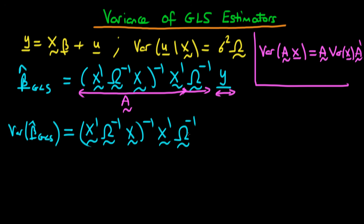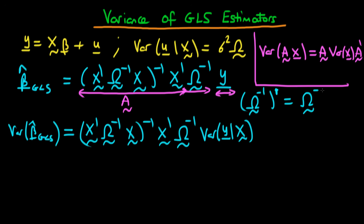We multiply by Var(y|X) and then find the transpose of the entire A matrix. It turns out that the transpose of Ω⁻¹ is just Ω⁻¹ — it is a symmetric matrix. When taking the transpose of a product, the order inverts, so we work through each term.